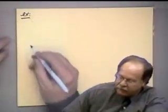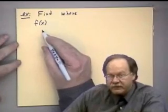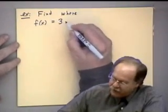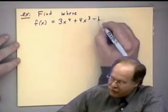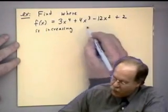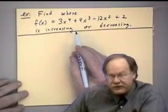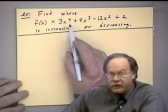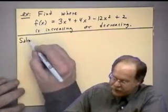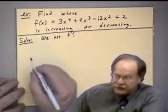We're not going to prove this right now because we don't have the tools, but later we'll discuss what would be done to prove it. For now it's important to look at an example. Here is a typical problem: find where a function is increasing or decreasing. We'll start with polynomials. Let f(x) = 3x⁴ + 4x³ − 12x² + 2. Find where that function is increasing or decreasing.